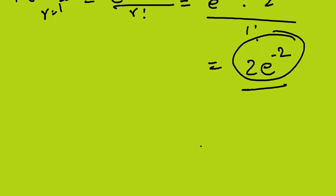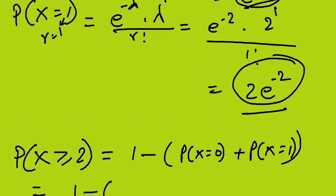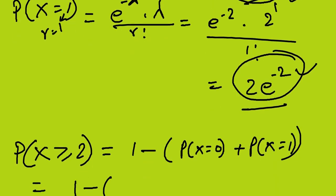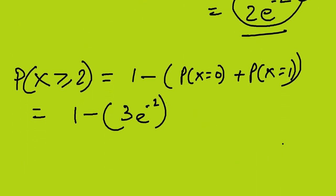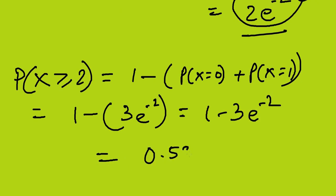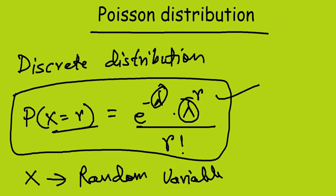P(X ≥ 2) = 1 minus [P(X=0) + P(X=1)] = 1 minus [e^(-2) + 2·e^(-2)] = 1 minus 3·e^(-2), which equals 0.5939. We have now solved two problems and seen an introduction to the Poisson distribution. This video is intended as a short revision just before exams.